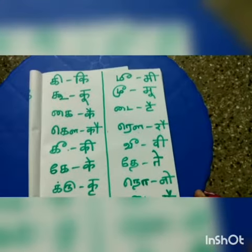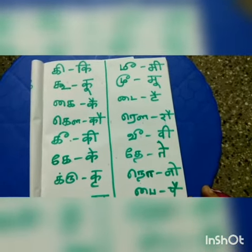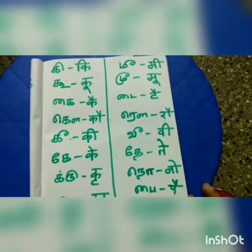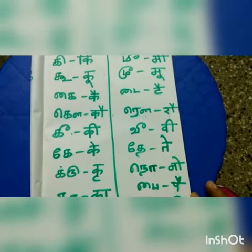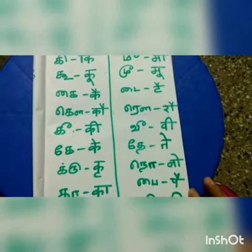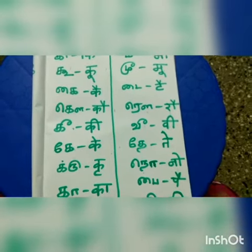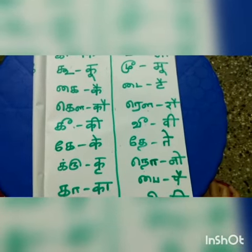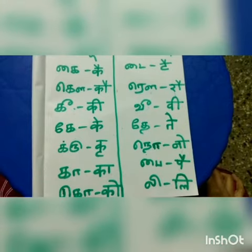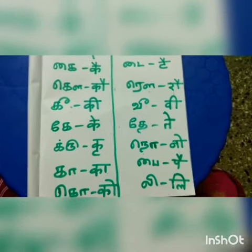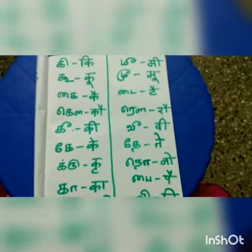Ki, like this. Ku, Mu, Kai, Thai, Kau, Rau. Ki, Bi, Ke, Te, Ru, No, Ka, Pai, Ko, Li.